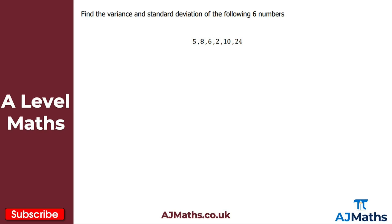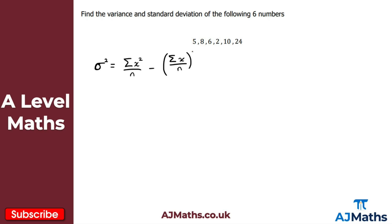We are asked to find the variance and standard deviation of the following six numbers: 5, 8, 6, 2, 10, and 24. Let's recall the formula for the variance: σ² = Σx² over n, minus (Σx over n) all squared. So what I need here is n, Σx, and Σx².